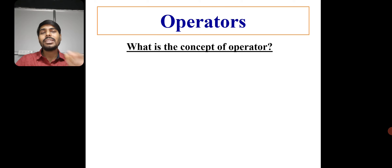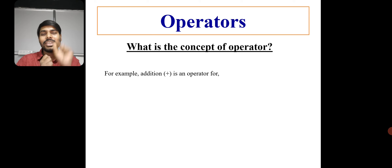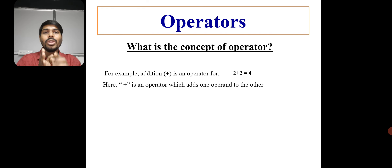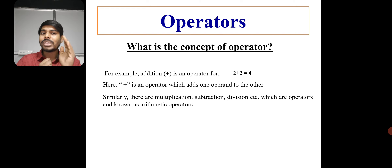Let's try to understand what we mean by operators. Everyone knows that when we add two numbers, we use the plus symbol. This plus symbol is an operator. For example, two plus two gives four — so plus is an operator which adds one operand to the other. Similarly, there are multiplication, subtraction, division, and several other operators in arithmetic. These are known as arithmetic operators.